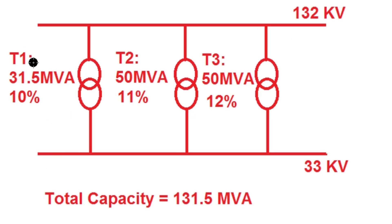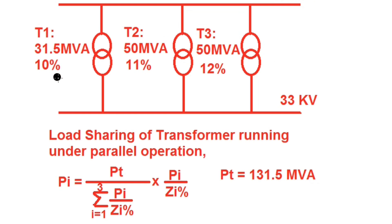The capacities of transformer 1, 2, and 3 are 31.5 MVA, 50 MVA, and 50 MVA respectively, giving a total substation capacity of 131.5 MVA. Under parallel operation, load sharing is governed by the capacity of each transformer in terms of MVA and their percentage impedance.